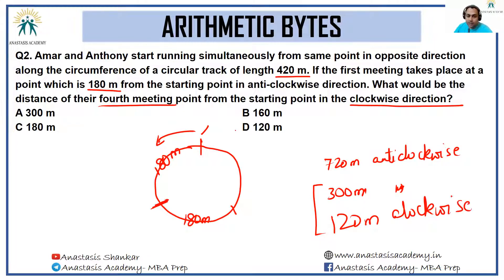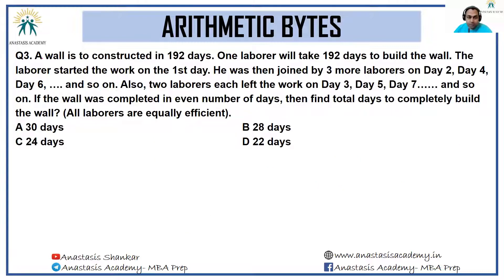Next question: A wall is to be constructed in 192 days. One laborer will take 192 days to build the wall. The laborer started the work on day one. He was then joined by three more laborers on day two, day four, day six, and so on. Also, two laborers each day left the work on day three, day five, day seven, and so on.